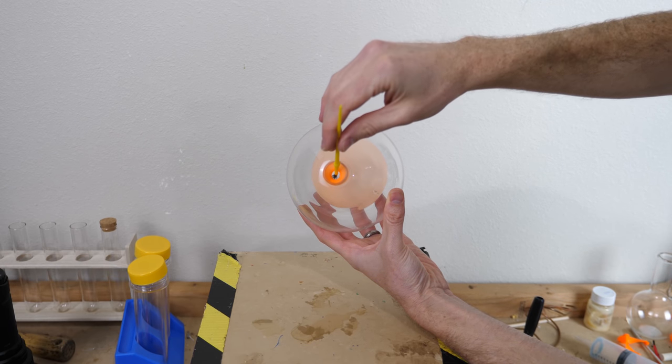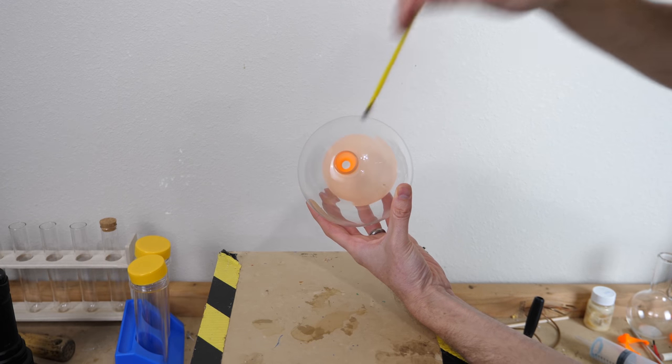Alright, so there you go. That is how you make a pressureless balloon. Hey everyone, thanks for watching another episode of the Action Lab. I hope you enjoyed it. If you have any questions or comments, let me know in the comments section and I'll try to get to them. And if you haven't checked out the Action Lab subscription box yet, go check it out right now.